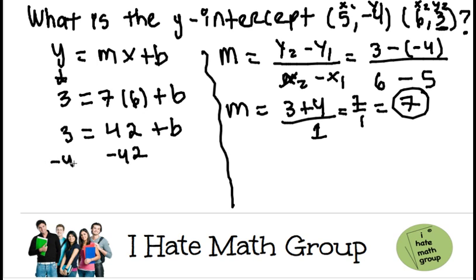Negative 42, negative 42, b equals 3 minus 42, which is just negative 39.